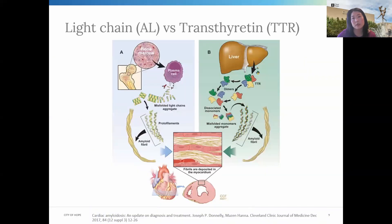The two most common types of amyloidosis are the light chain or AL amyloid, or the transthyretin or TTR amyloid. It's important to distinguish between the two as the pathophysiology is unique and the treatment is unique. The light chain amyloid is related to a clonal plasma cell disorder, meaning there's an abnormal plasma cell population in the bone marrow causing an overproduction of abnormal immunoglobulin light chains — a monoclonal light chain — either kappa or lambda. The kappa and lambda free light chains are normal components of the antibodies, but one of these is overproduced from these clonal plasma cells. These light chains can misfold, causing the amyloid fibrils, which can then deposit into any organ system causing functional damage.